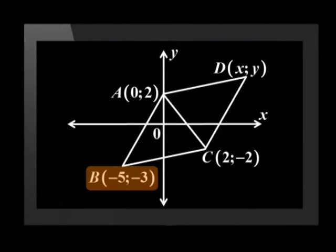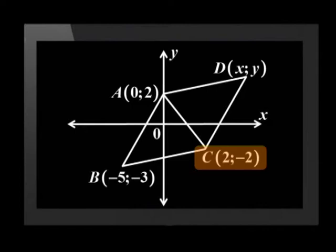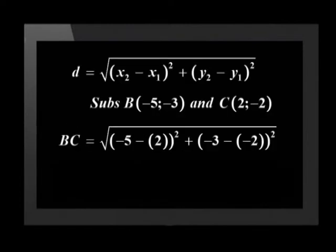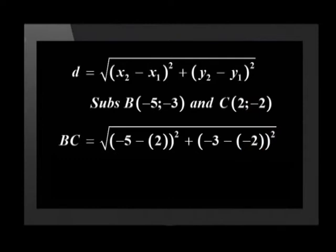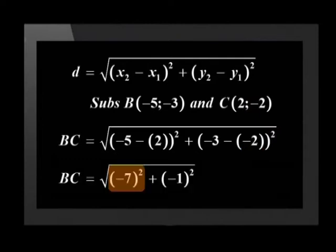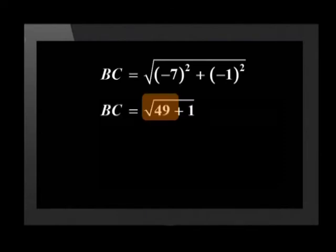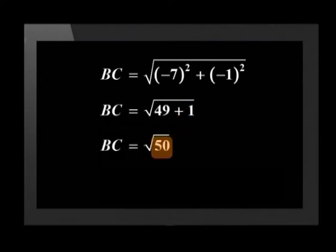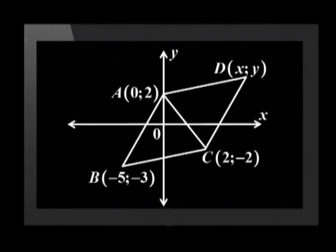Let's find the last side now. We substitute point B(-5, -3) and C(2, -2) into the distance formula. BC equals the square root of (negative 5 minus 2) squared plus (negative 3 minus negative 2) squared. Using BODMAS, the first bracket is negative 7 and the second is negative 1. Negative 7 squared is 49 and negative 1 squared is 1. 49 plus 1 equals 50, which simplifies to 5 times the square root of 2.